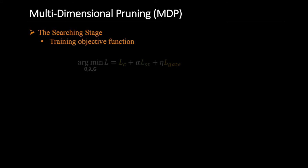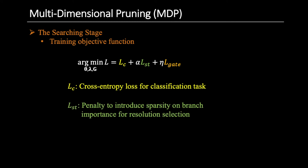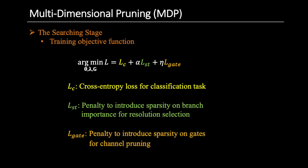Here is our training objective function. We aim to learn the parameters for convolution, zeta — the importance for branches, lambda — and the gate values, g. LC is the standard cross-entropy loss for the classification task. LST is the penalty to introduce sparsity on branch importance. L-gate is the penalty to introduce sparsity on gate values. When training the network by this objective function, the importance scores of many branches and channels will be close to zero, and we can safely remove these branches and channels later.